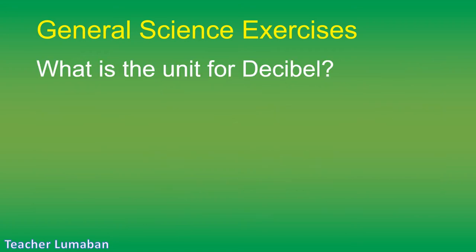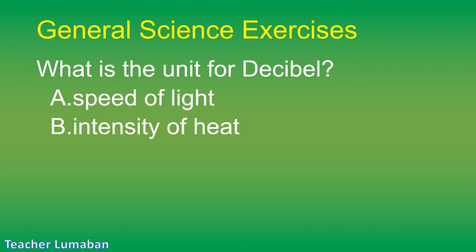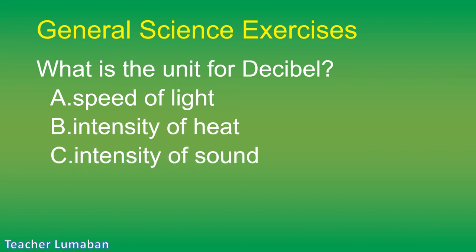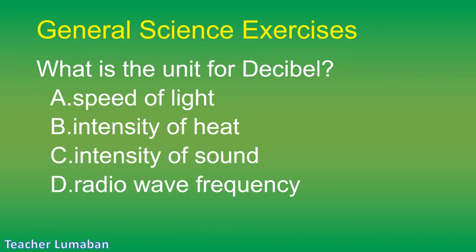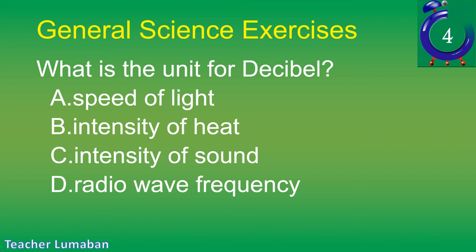What is the unit for decibel? Letter A: speed of light. Letter B: intensity of heat. Letter C: intensity of sound. Letter D: radio wave frequency.